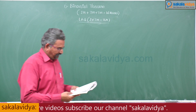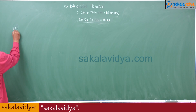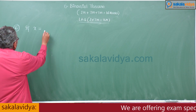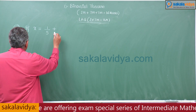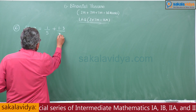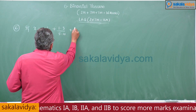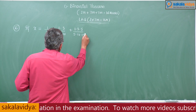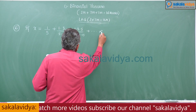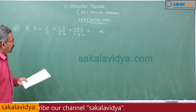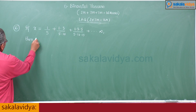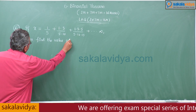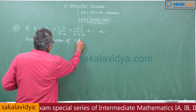Sixth question: If x = 1/5 + 1·3/(5·10) + 1·3·5/(5·10·15) + ... to infinity, then find the value of 3x² + 6x.